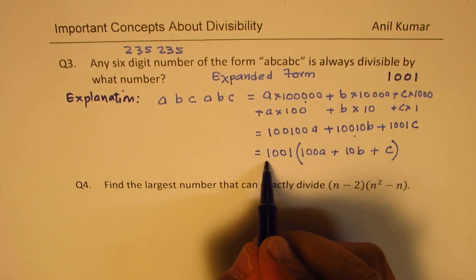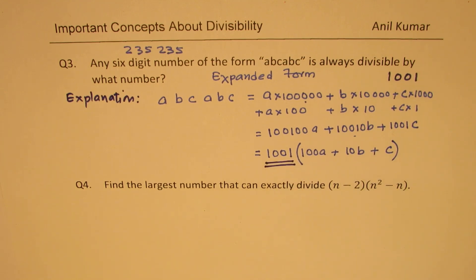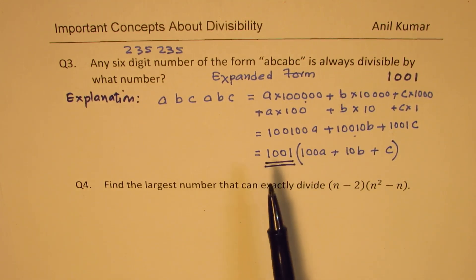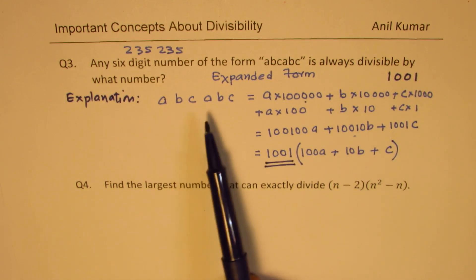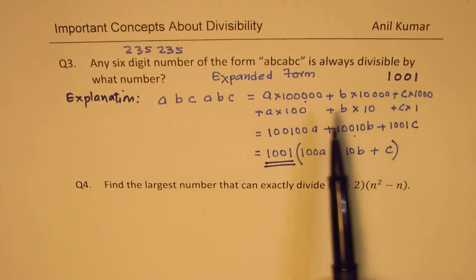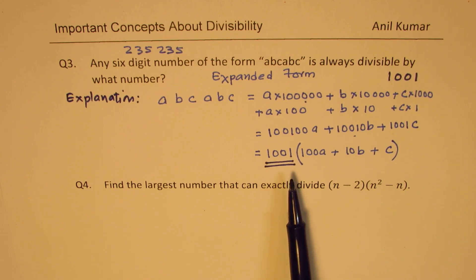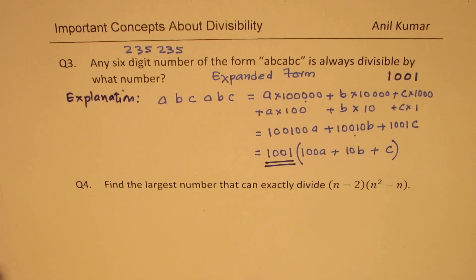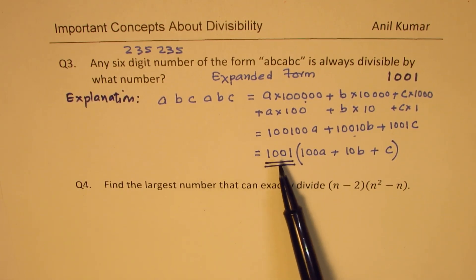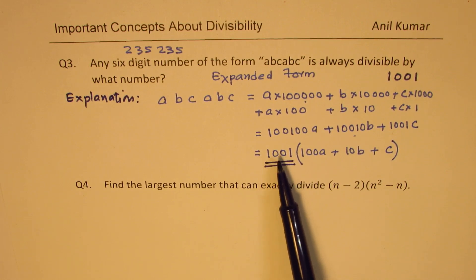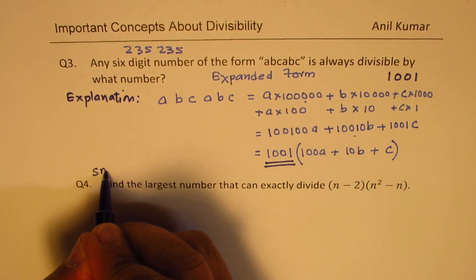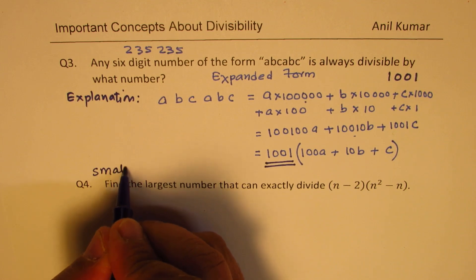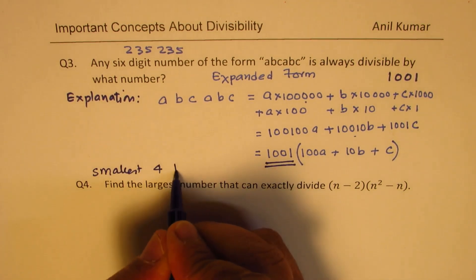So 1001 is a common factor, and that is our answer. Similar type of questions can be solved with this technique. Note that 1001 is also the smallest four-digit prime number.